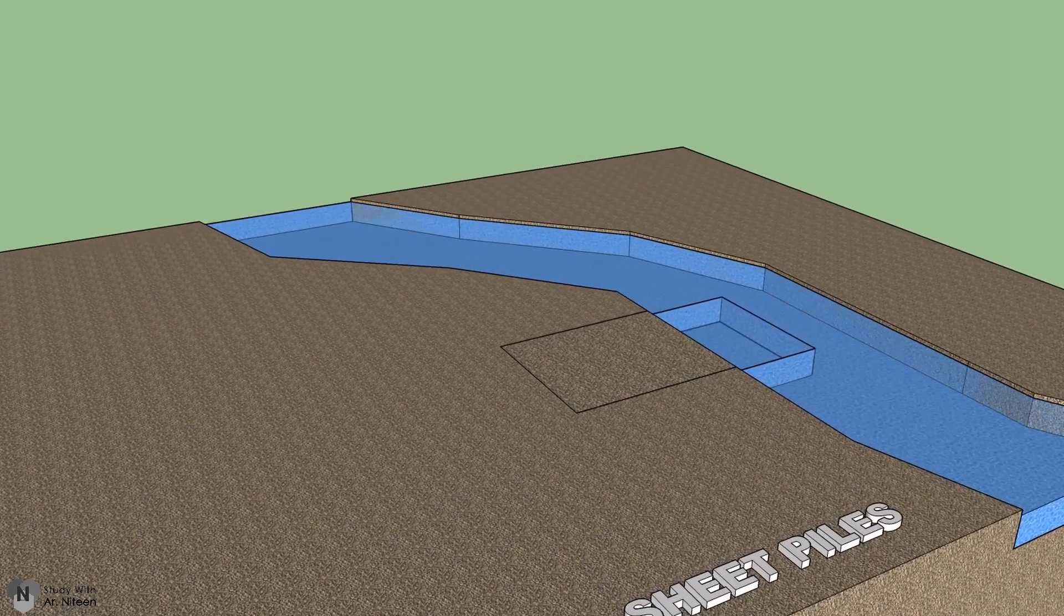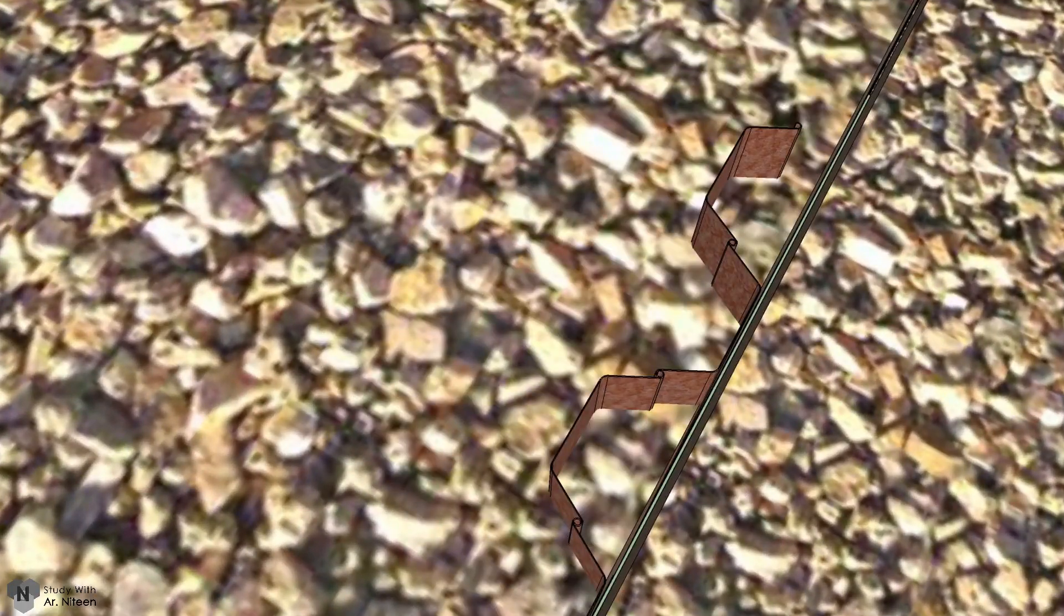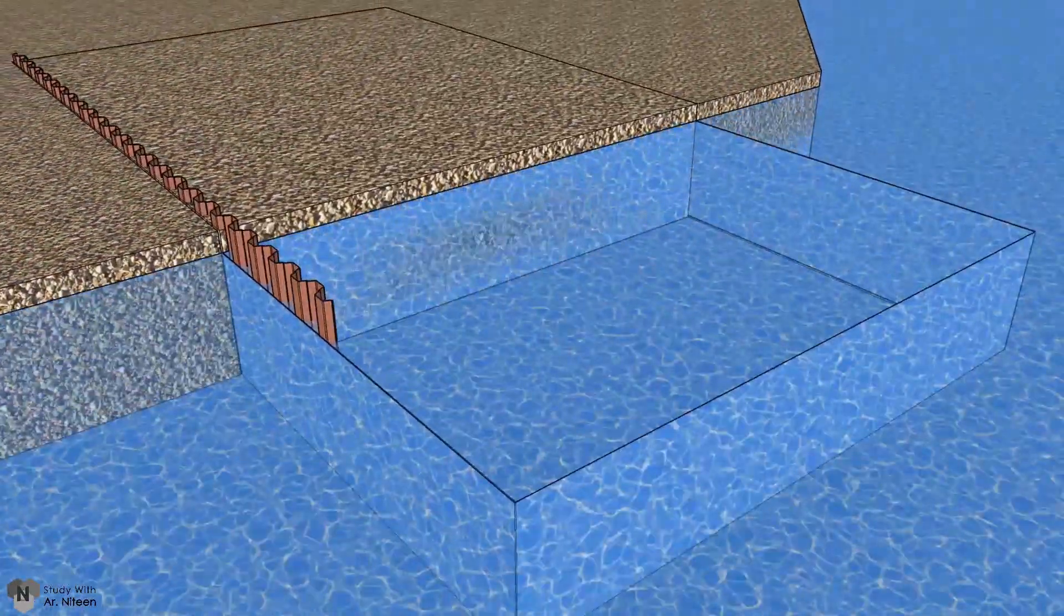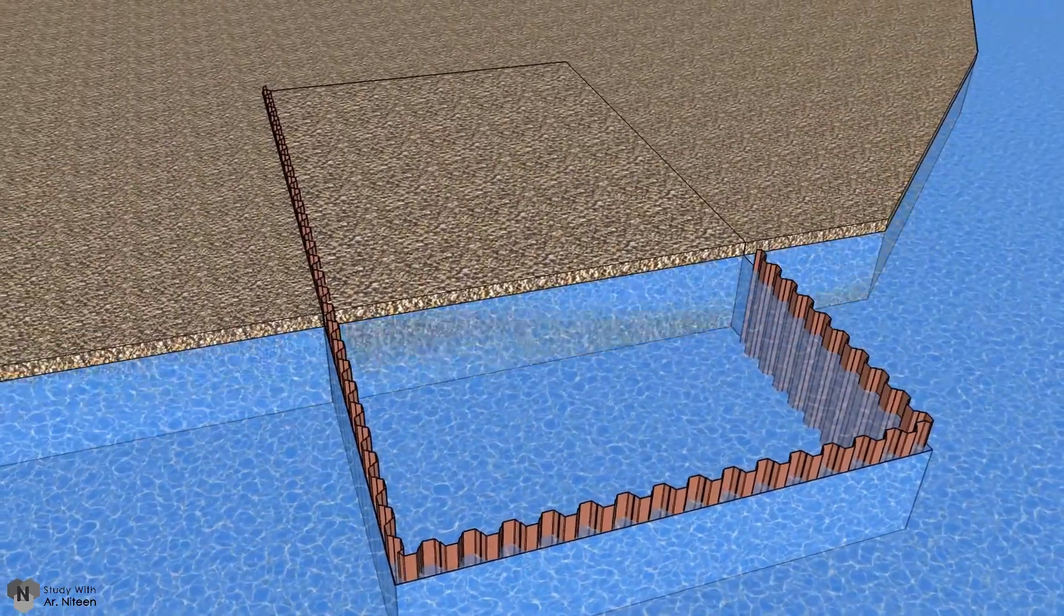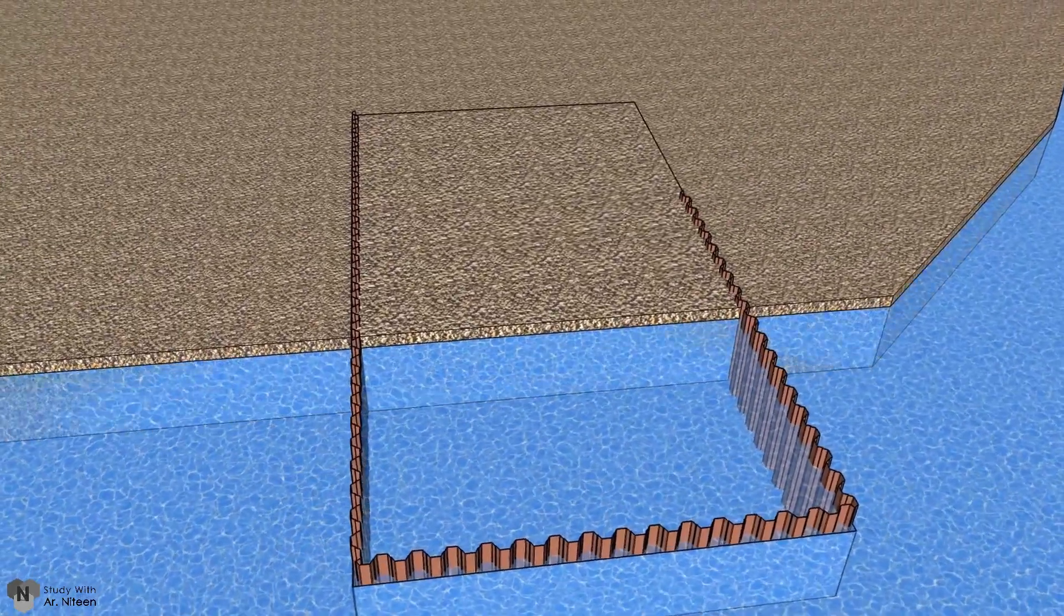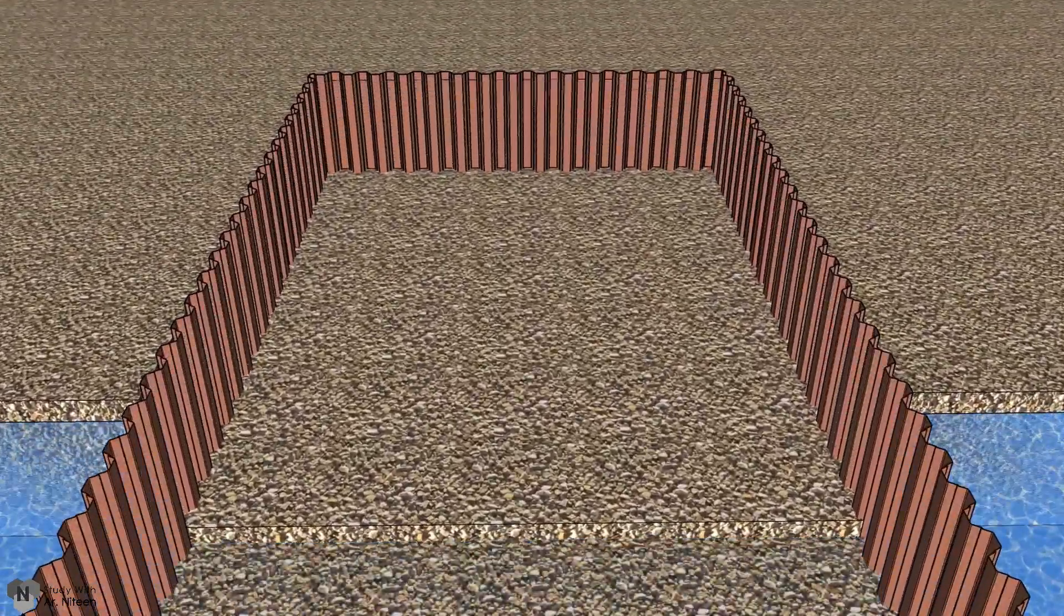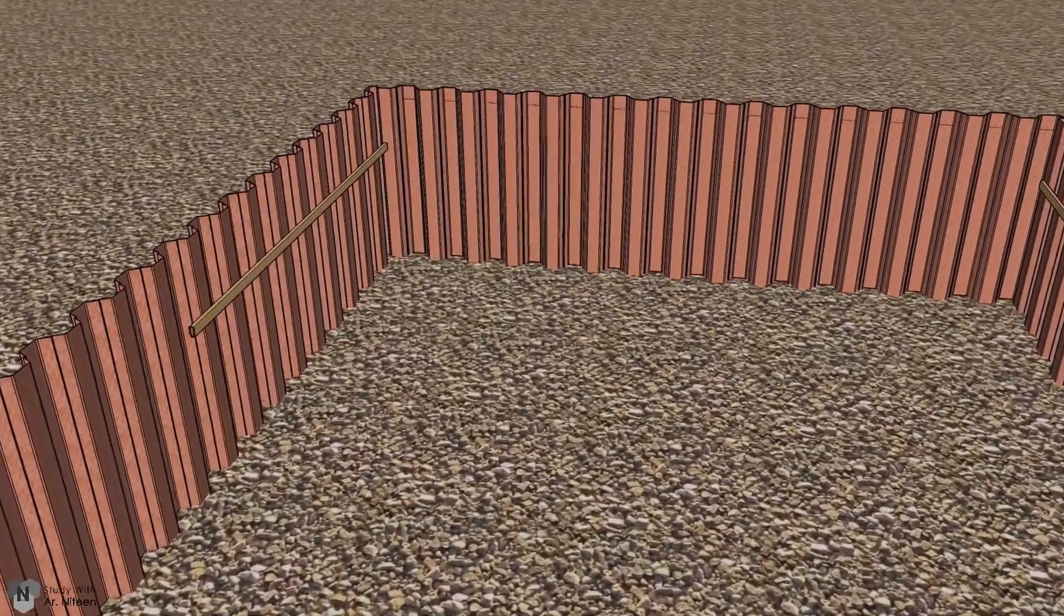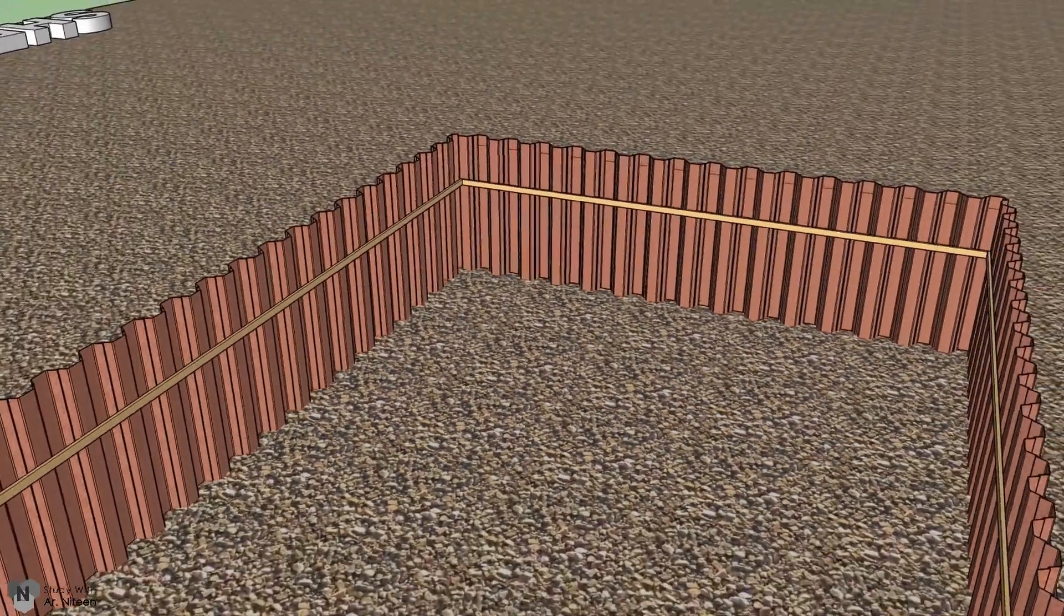Sheet piles: Sheet piling is an earth retention and excavation support technique that retains soil using steel sheet sections with interlocking edges. Sheet piles are installed in sequence to design depth along the planned excavation perimeter or sea wall alignment. The interlocked sheet piles form a wall for permanent or temporary lateral earth support and reduce groundwater inflow. Anchors can be included to provide additional lateral support if required.